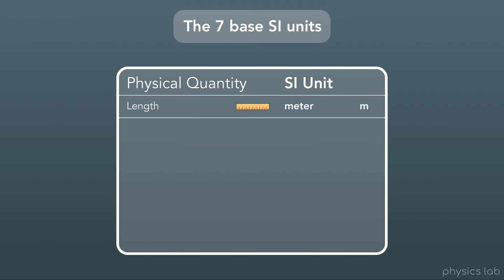So there are seven important base SI units. The unit for length or distance is meters, abbreviated lowercase m. For mass, it's kilograms, or lowercase kg. For time, it's seconds, or lowercase s.